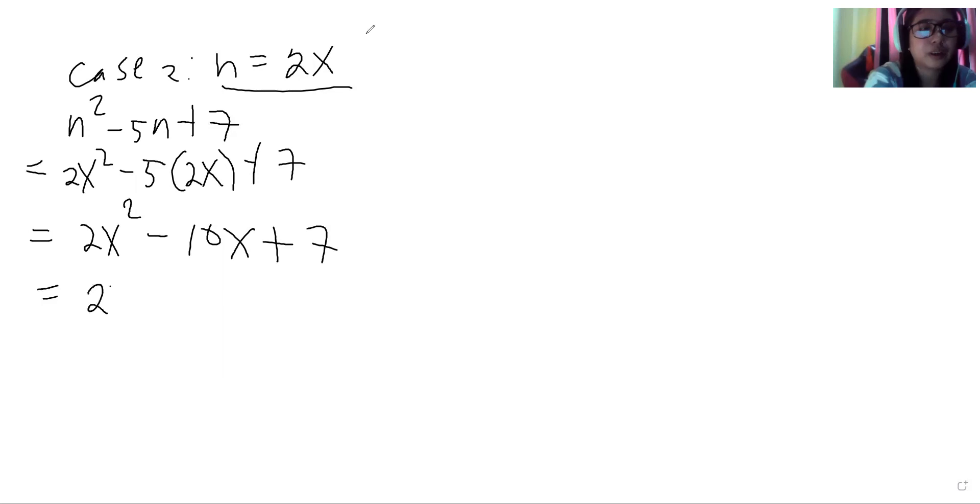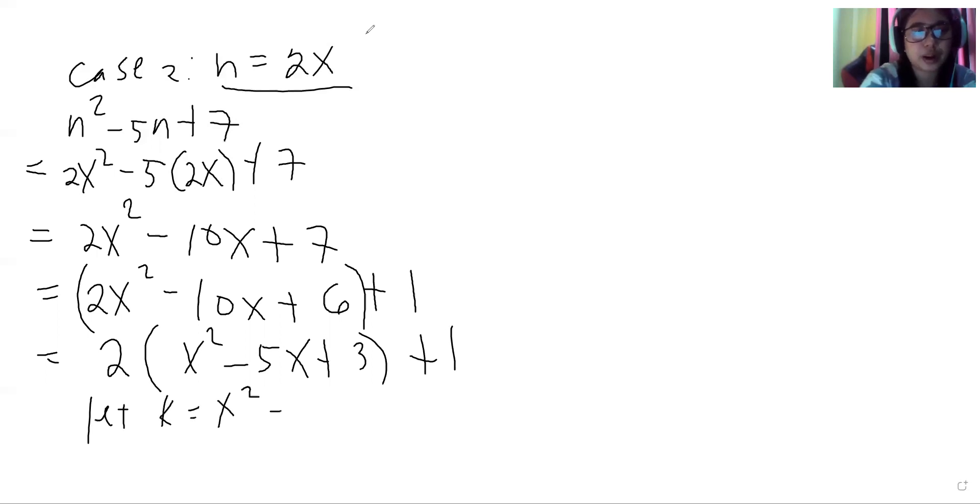We will break down 7 to 6 plus 1. And then group 2x squared minus 10x plus 6 plus 1. Factor out 2, so we have 2 times x squared minus 5x plus 3 plus 1. Let k equal x squared minus 5x plus 3. Which means that n squared minus 5n plus 7 is equal to 2k plus 1. By definition, this is odd number. So if our n is an integer, be it odd or even integer, n squared minus 5n plus 7 is odd.